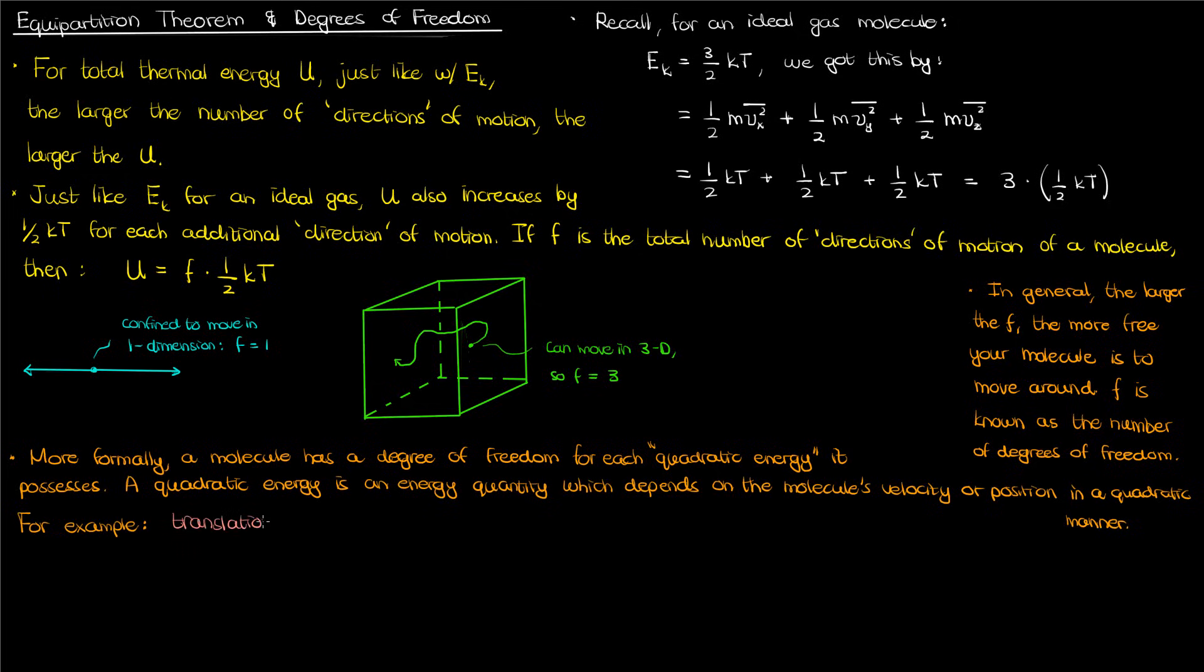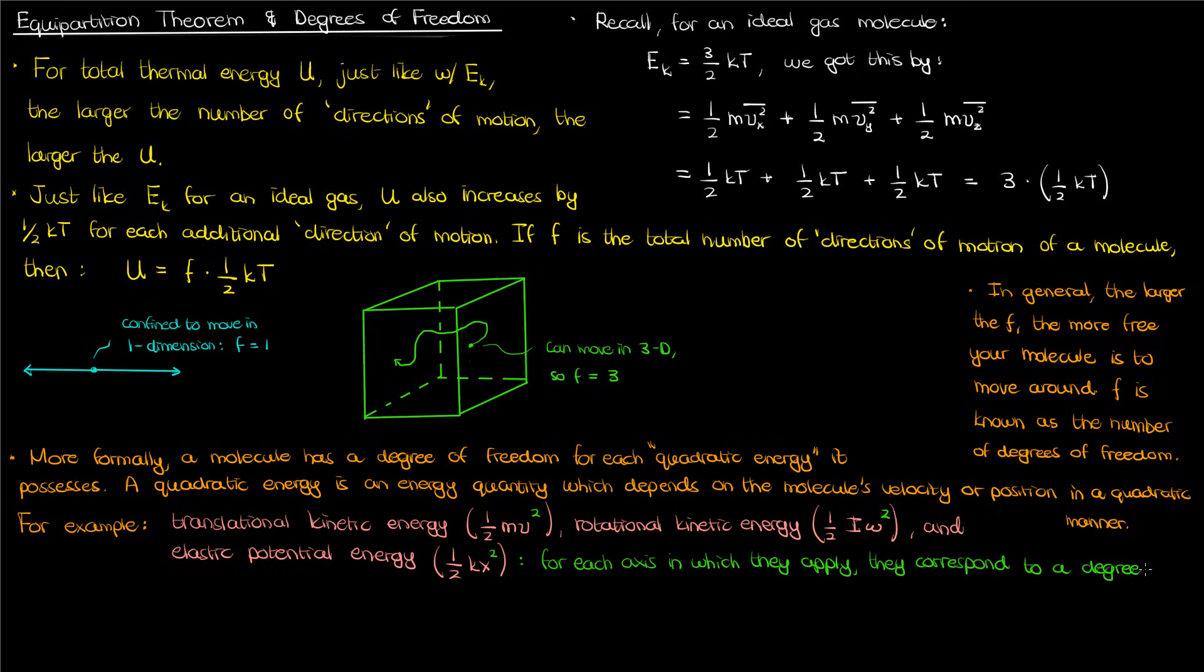So for instance translational kinetic energy, half mv squared, rotational kinetic energy, half i times omega squared where omega here is the angular velocity, and elastic potential energy, half kx squared, they're all quadratic energies, and for each axis in which they apply they correspond to a degree of freedom.